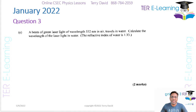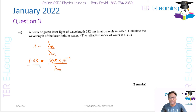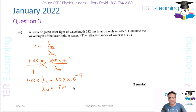Next: a beam of green laser light of wavelength 532 nanometres in air travels in water — calculate the wavelength in water. We know n equals lambda-a over lambda-m, so 1.33 equals 532 × 10⁻⁹ over lambda-m. Cross-multiplying: 1.33 × lambda-m equals 532 × 10⁻⁹, so lambda-m equals 532 × 10⁻⁹ over 1.33.